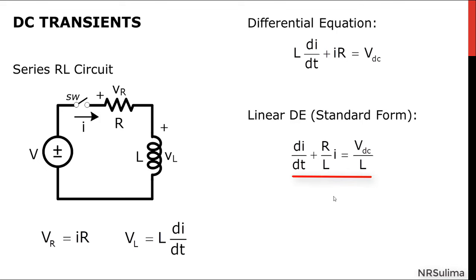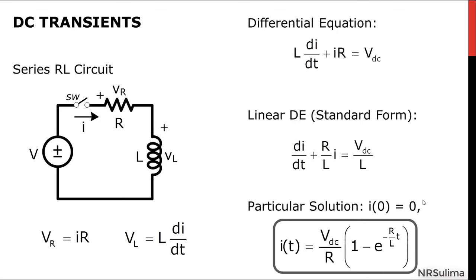Rearranging this equation and writing it as a standard form of a linear differential equation with the current as the dependent variable, we can find the particular solution of the current: I of t equals Vdc over R times the quantity 1 minus exponential negative R over L times t, with the initial condition I of 0 equal to zero. The Vdc over R is the steady state component, and Vdc over R exponential negative R over L times t is the transient component.